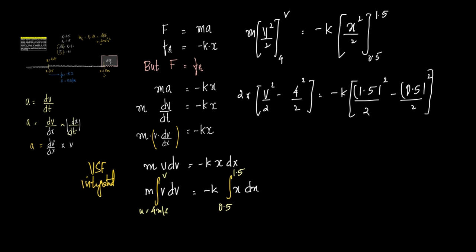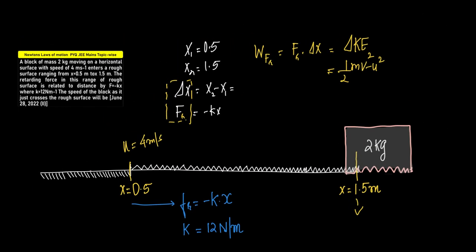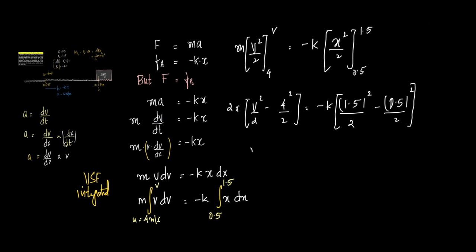So what is the value of k? The value of k is given to us as 12 newton per meter. So which means if we do the further calculation, what we get is 2 into v square by 2 minus 16 by 2 is equal to minus k into 1.5 square minus 0.5 square. I'll cancel out 2 from the whole equation here. So what do we get?